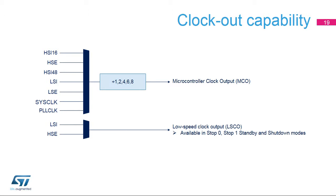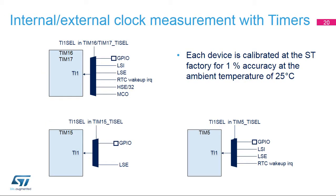The low-speed clock output feature enables the external output of the LSI or LSE clock, and is available in stop 0, stop 1, standby, and shutdown modes. It is possible to indirectly measure the frequency of all onboard clock sources by means of TIM5, TIM15, TIM16, or TIM17 channel 1 input capture. These measurements can be used to calibrate the LSI and HSI16 frequencies. RC oscillator frequencies can vary from chip to chip due to manufacturing process variations, so each device is calibrated at the ST factory for 1% accuracy at 25°C. After reset, the HSI16 factory calibration value is automatically loaded. If the application is subject to voltage or temperature variations, software can perform a clock trimming.